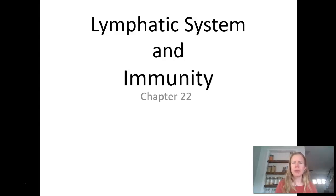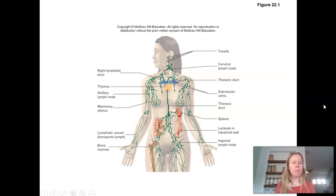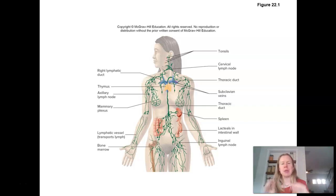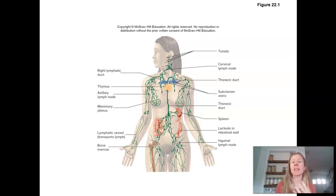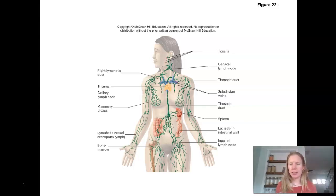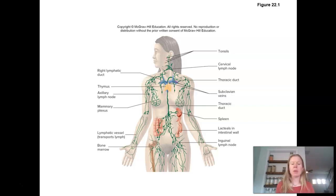As we look at the lymphatic system, we're looking at all the cells, tissues, and organs that are responsible for producing, maintaining, and distributing lymphocytes. These lymphocytes — things like B cells and T cells — are going to be part of what we call specific immunity, a big part of how we resist infections and disease. It's the lymphatic system because it takes care of lymphocytes.